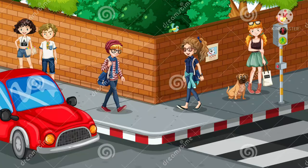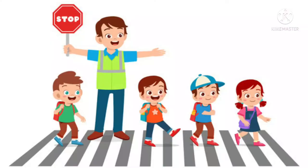Now I'm going to explain about zebra crossing. People should always walk on the footpath. People should always cross the road only through the zebra crossing when the light is red, because when the light is red, vehicles will not be moving, so people can cross the road easily and safely.